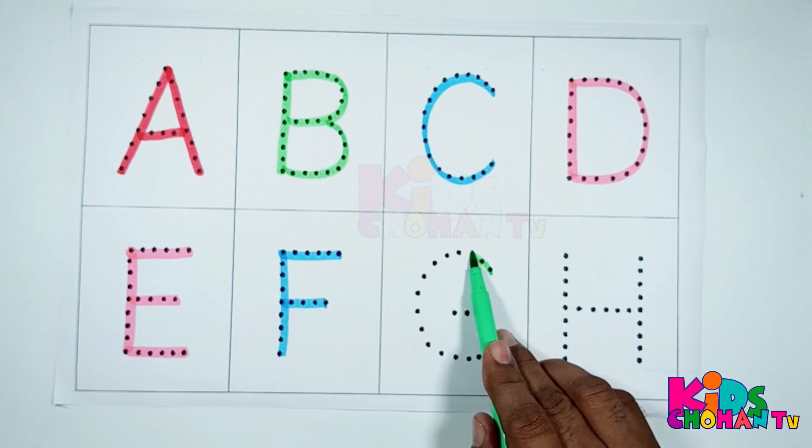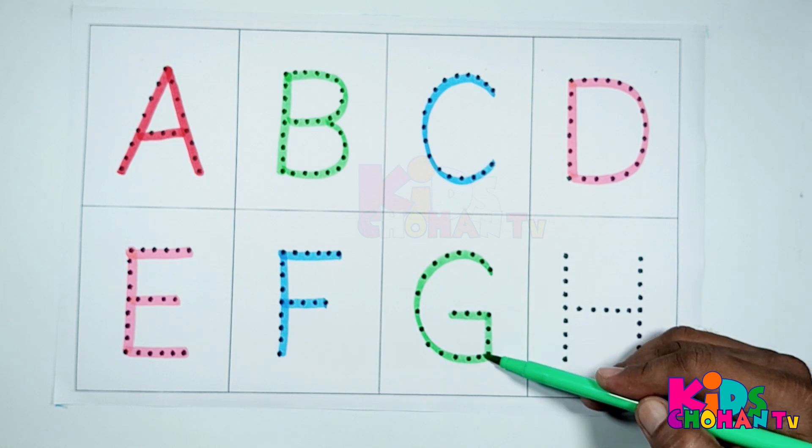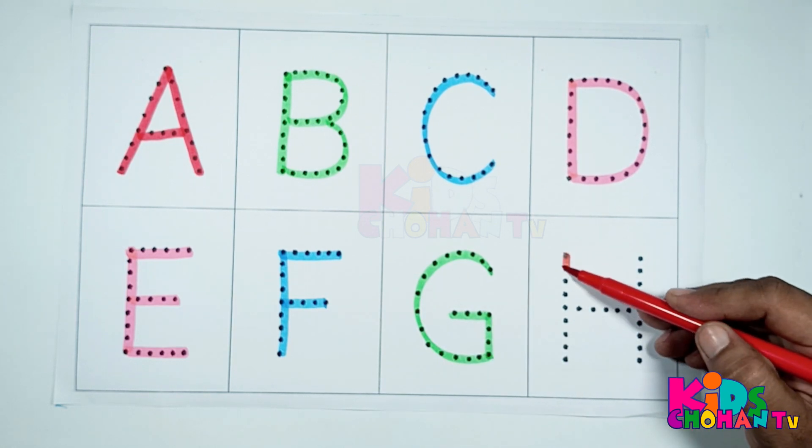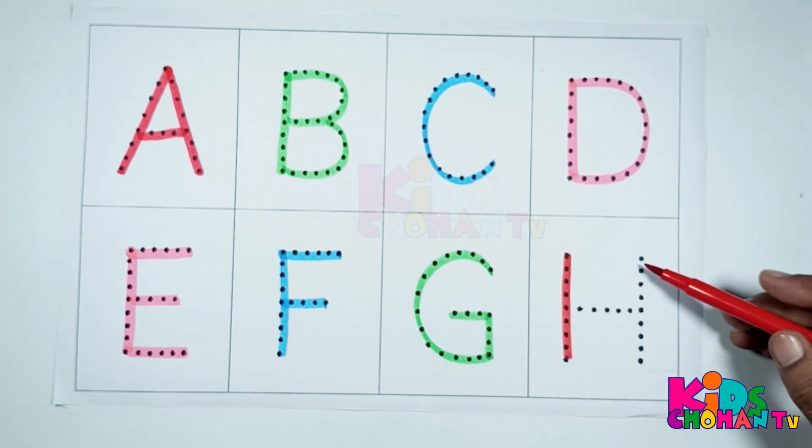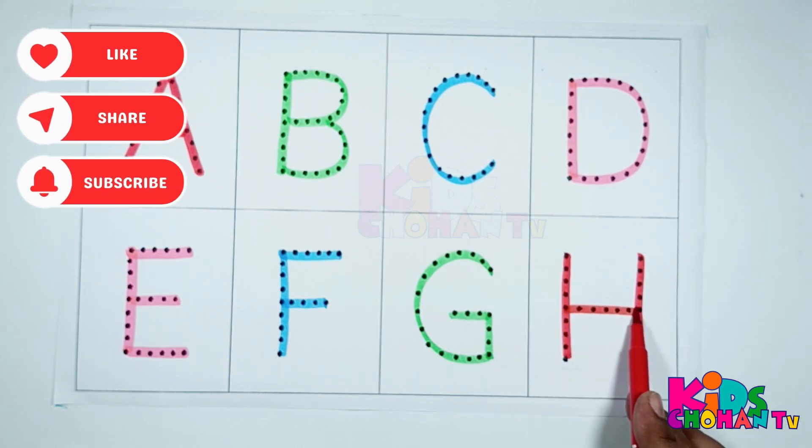Kids, this is letter G. G for gorilla. Kids, we are tracing letter H. H, H for house.